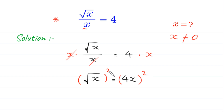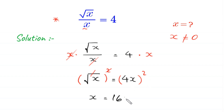From here we take the square of both sides. The square cancels with the square root on the left-hand side, and we are left with x equals 4x squared, which becomes 16x squared.